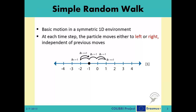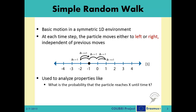This model can be used in many different fields, like ecology, economics, physics, chemistry, etc. It is generally used to analyze several properties of the motion and finding answers to specific questions, such as what is the probability that the particle reaches point x until time t, or what is the first-passage time distribution to point x, depending on the system parameters.